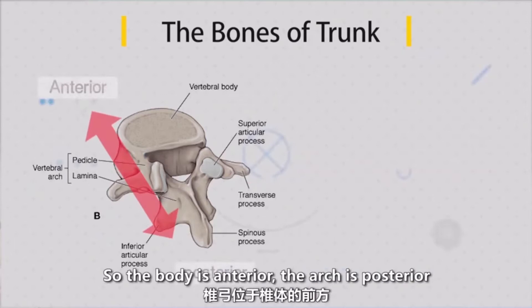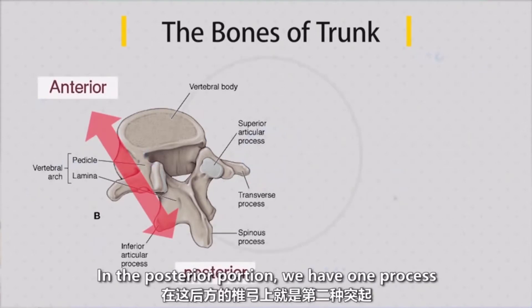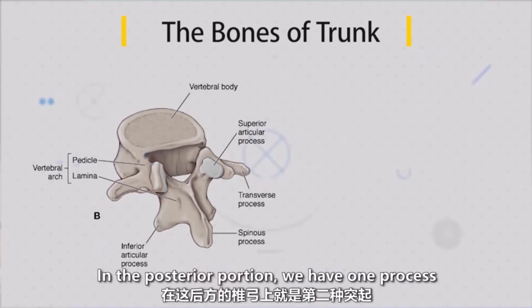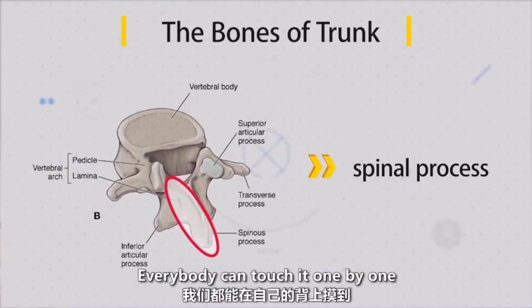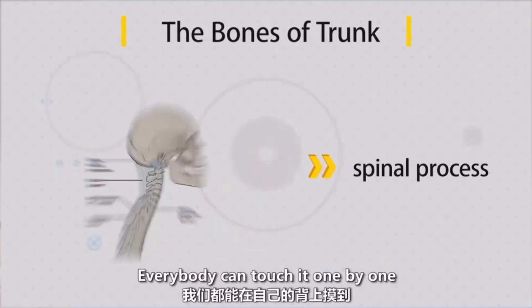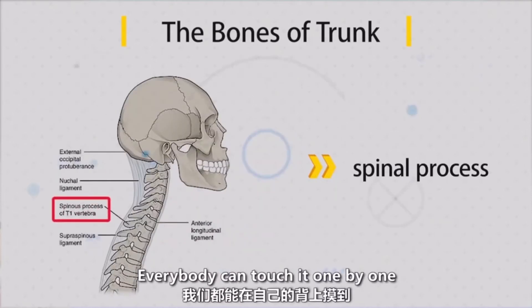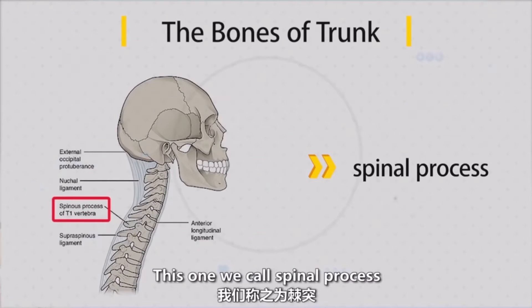So the body is anterior, and the arch is posterior. So on the posterior portion, we still have one process — this one, everybody can knock it, touch it one by one. This one we call the spinous process.